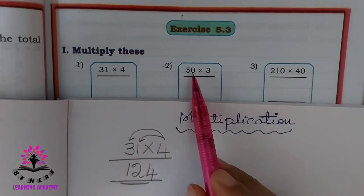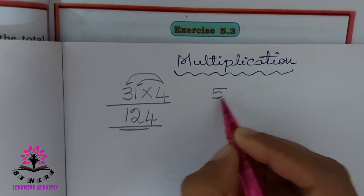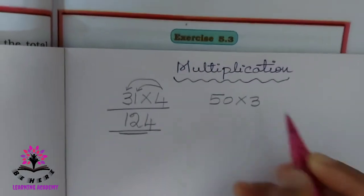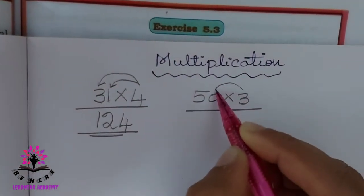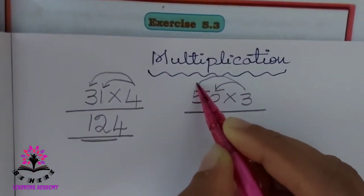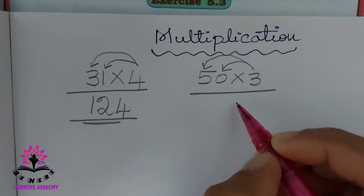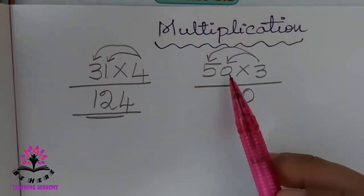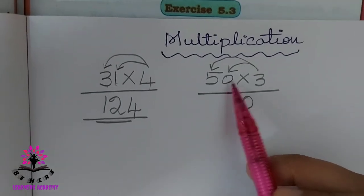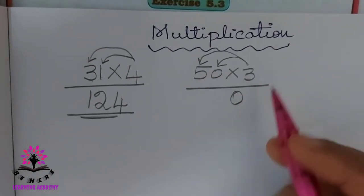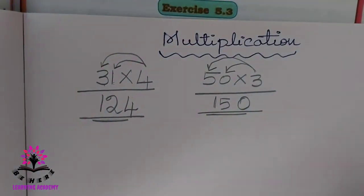See the next one: 50 into 3. First, 3 multiplied by 0, then 3 multiplied by 5. 3 into 0 is 0. Always remember one thing: whenever you multiply any number by 0, the answer is always 0. 3 fives are 15. So the answer is 150.